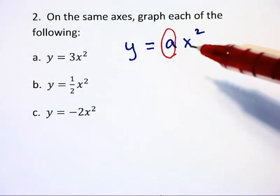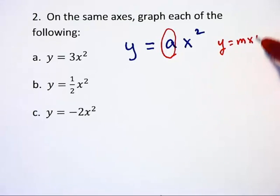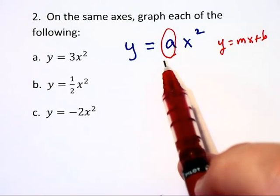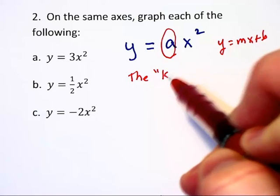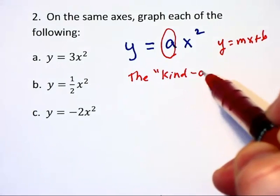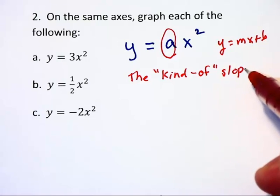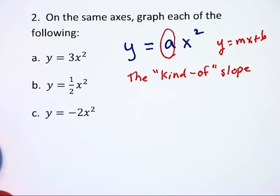Now when we graphed lines, you had y equals mx plus b, and m was the slope. A is not the slope here. I like to call it the kind of slope. Now you're not going to see this in any books at all, because it really has nothing to do with a linear slope at all, so that's why I've called it the kind of slope.